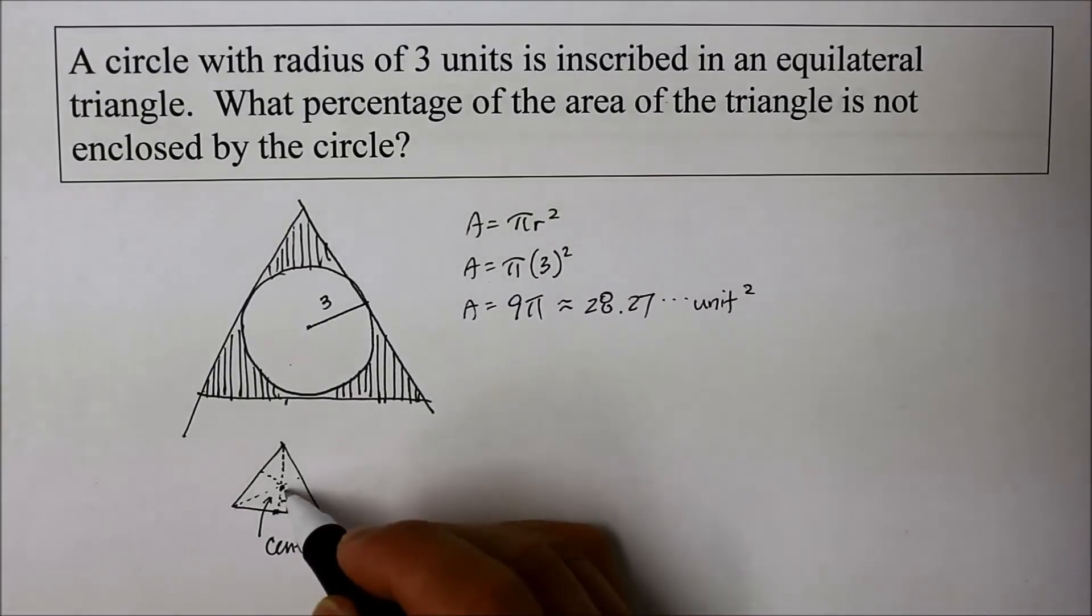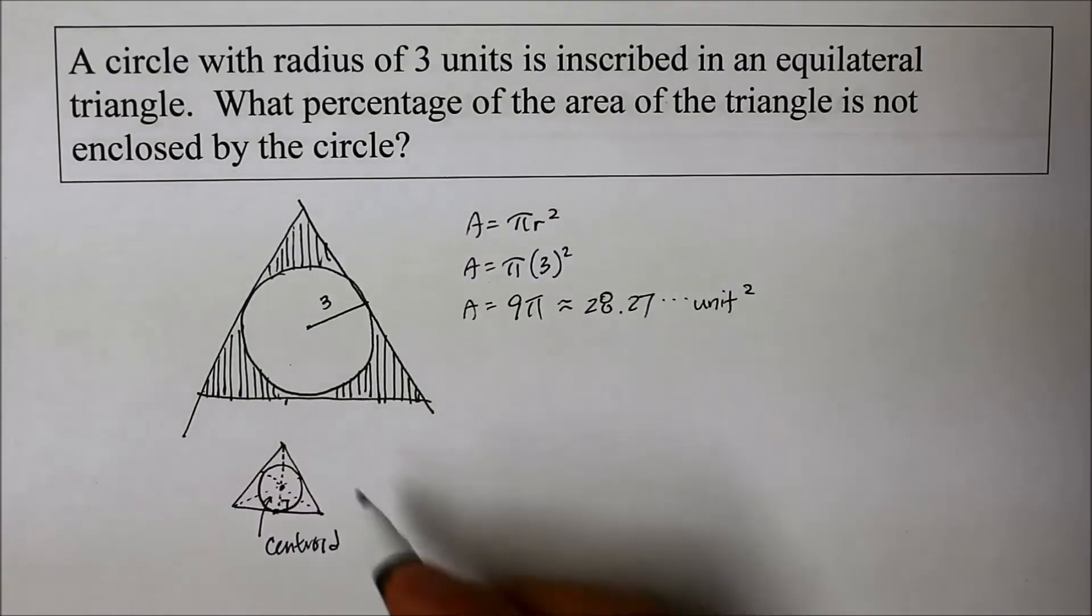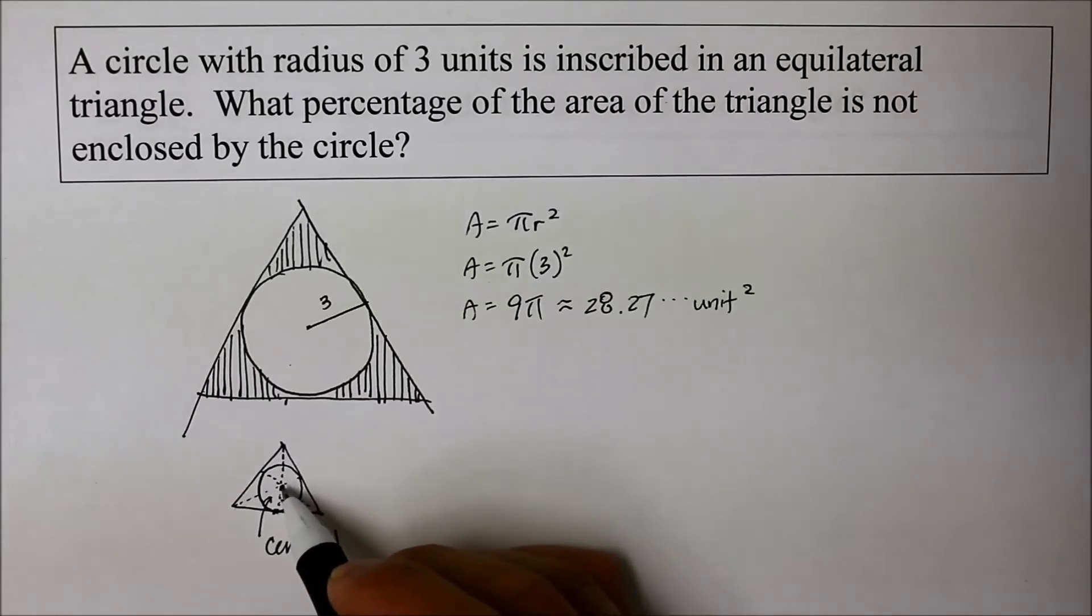And a centroid, a circle can be drawn, that distance from the centroid to the midpoint of the base of a triangle, is actually the radius of a circle that can be inscribed in it. And it says that the distance from the centroid to the midpoint of a side of a triangle is one third of the whole distance.